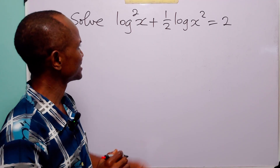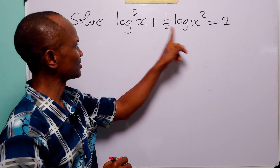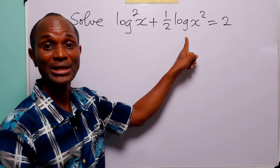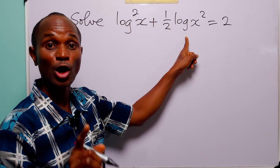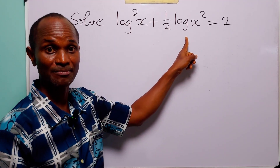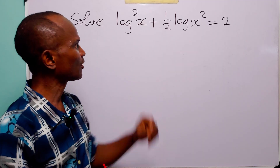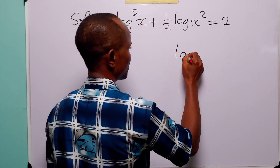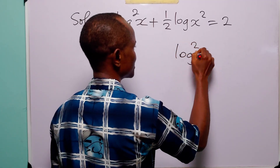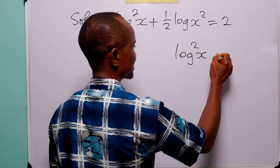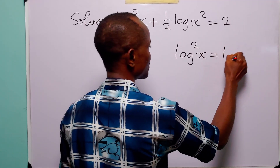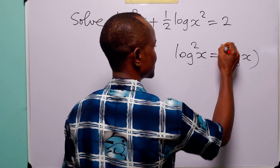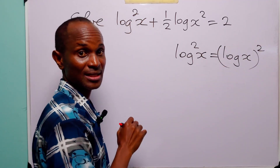The first one is that when the base of the logarithm is not specified, it means we are working with the common logarithm. The second one is that log squared of x is equal to log x, all squared.